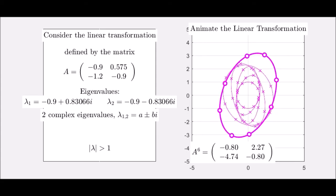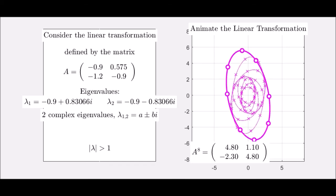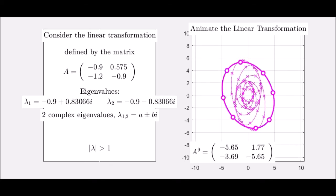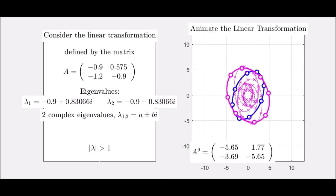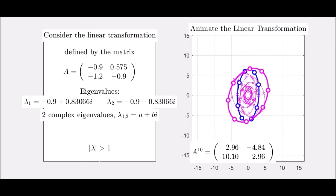However, it is the modulus of the eigenvalue that is the determining factor as to whether or not this is a convergent matrix or not. And since the modulus of the eigenvalue is greater than one, then we see the deformation of the circle become larger and larger.